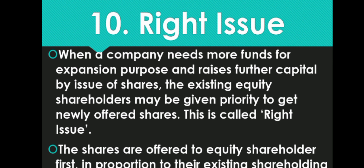Next is Right Issue. Just like bonus issue, there is right issue. When a company needs more funds for expansion purposes and raises further capital by issue of shares, the existing equity shareholders may be given priority to get newly offered shares. This is called Right Issue. The company issues extra capital through shares and gives existing equity shareholders an opportunity and priority.